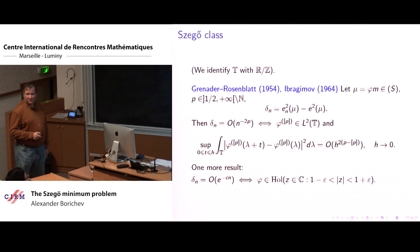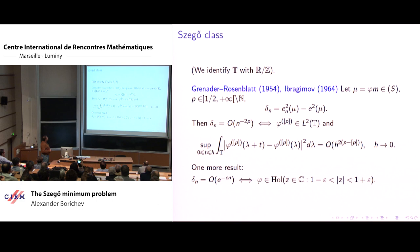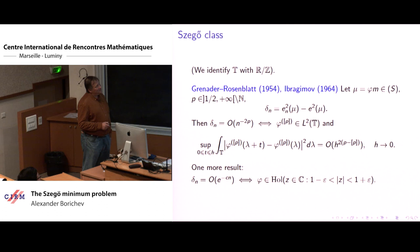Suppose we have a measure in the Szegő class and a parameter p strictly larger than one-half and not an integer. We are interested in the difference delta_n between e_n squared and the squared limit. Then this difference decays polynomially with parameter 2p, if two conditions are satisfied: first, the corresponding derivative with integer part of p is in L2 on the unit circle, and second, we have an integral-type smoothness condition on this derivative.